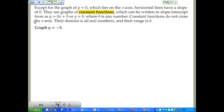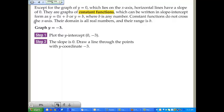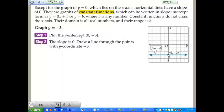So say you wanted to graph y equals negative 3. It's really simple. Plot the y-intercept of point 0, negative 3. Draw a line through the points with y-coordinate equal to negative 3. Your y-intercept's negative 3, and your graph creates a nice horizontal line that never touches the x-axis. When you have a graph like this, it is known as a constant function. Anytime you have an equation in the form y equals b, it is a constant function.